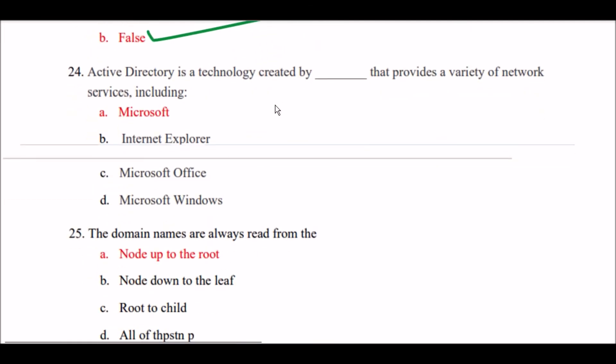Next question: Active Directory is a technology created by blank space that provides a variety of network services. Option A: Microsoft. Option B: Internet Explorer. Option C: Microsoft Office. Option D: Microsoft Windows. The right answer is Option A — Active Directory is a technology created by Microsoft that provides a variety of network services.